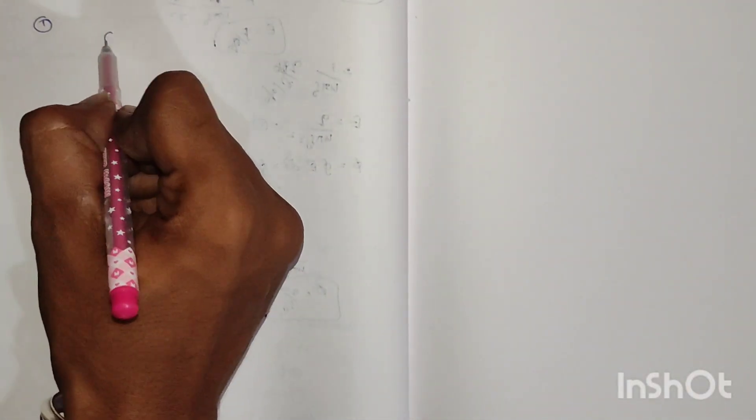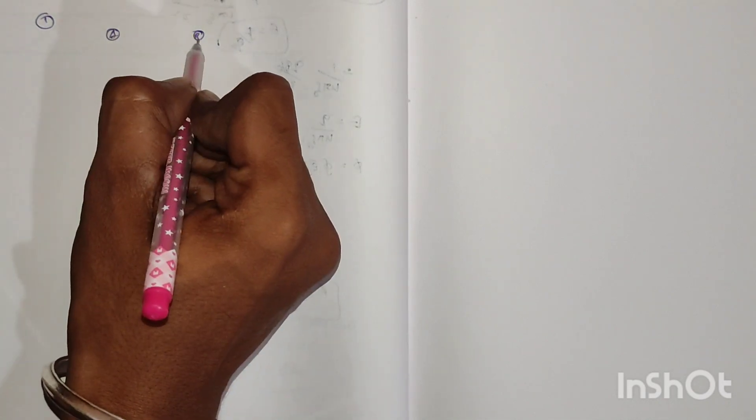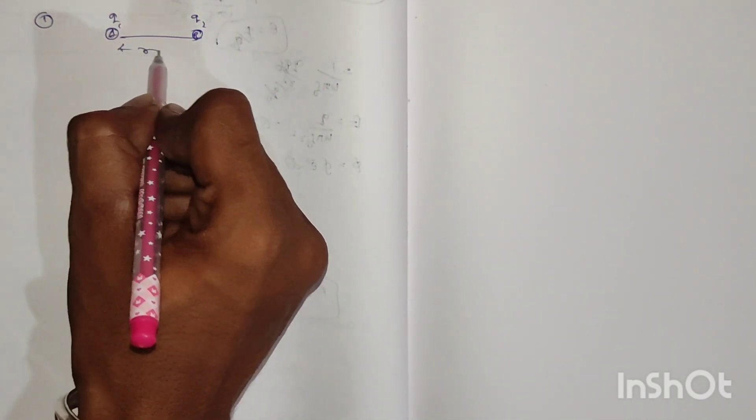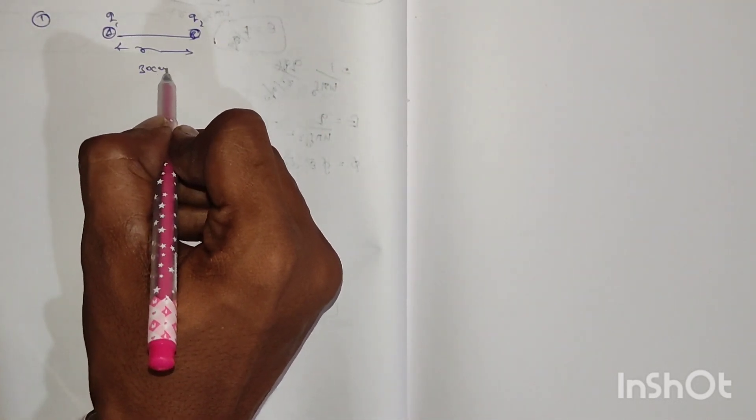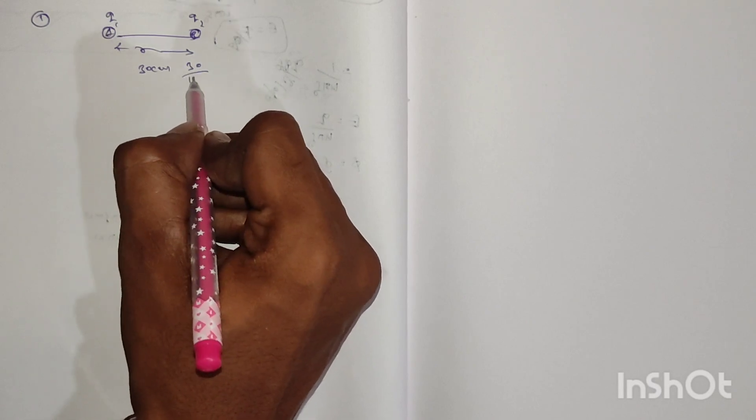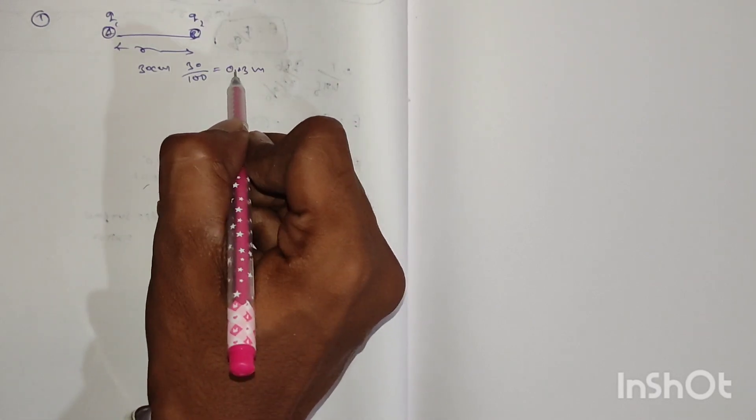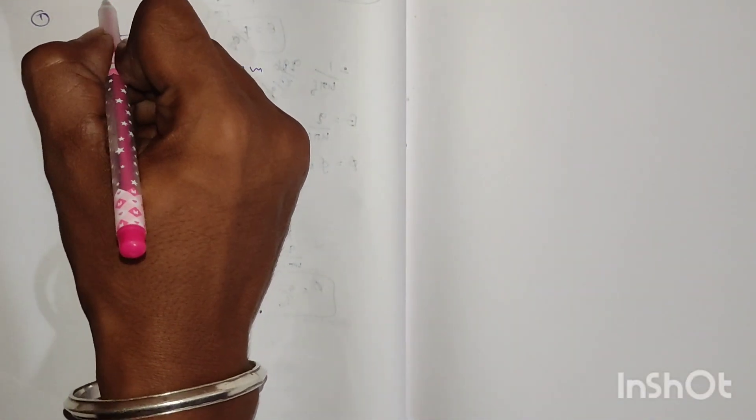Consider the two charged spheres, q1 and q2. The distance between the two charges is 30 centimeters. Converting to meters: 30 centimeters divided by 100 equals 0.3 meters.